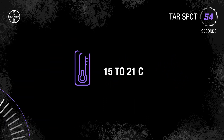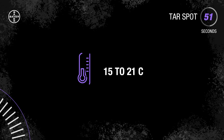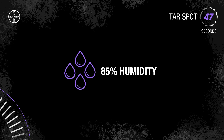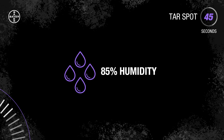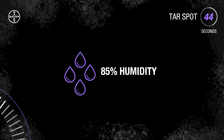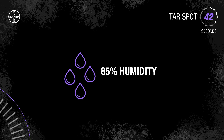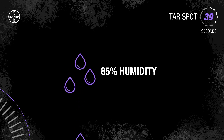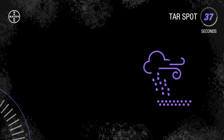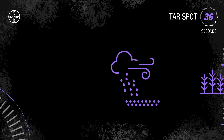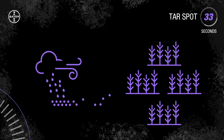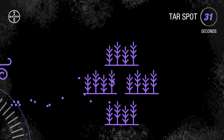Tar spot develops more rapidly in cool temperatures — 15 to 21 degrees Celsius — and humid conditions around 85% relative humidity. But infection doesn't stop in higher temperatures; it will continue to spread with just 7 hours of leaf wetness per day, which is very common in the Great Lakes Basin. Spores can overwinter in the soil and corn residue, and storms can spread spores of the pathogen to new plants and fields.